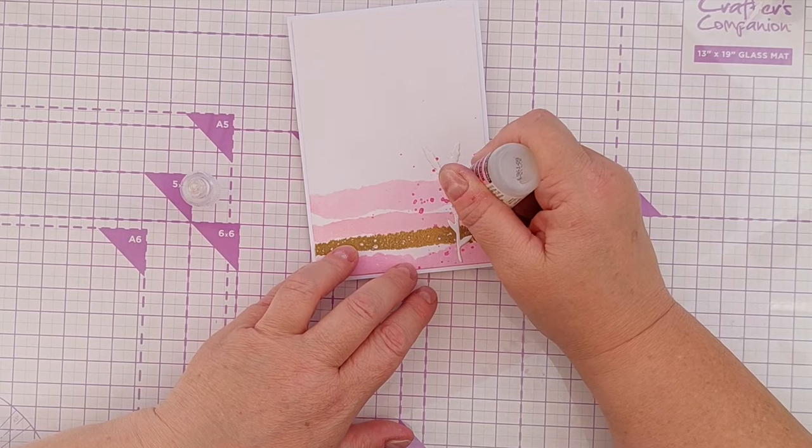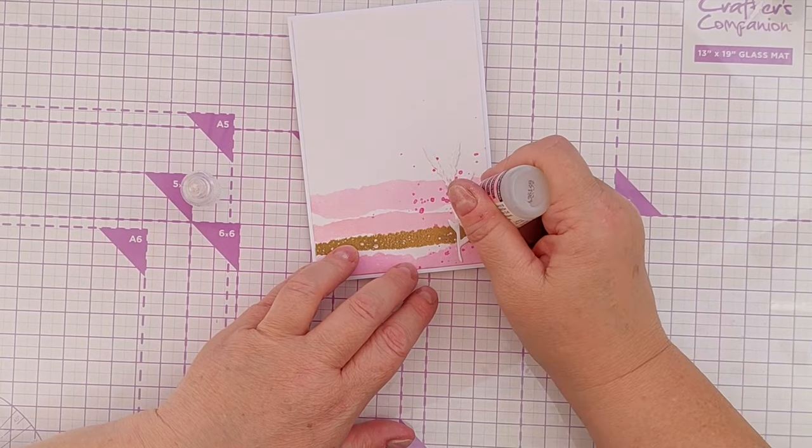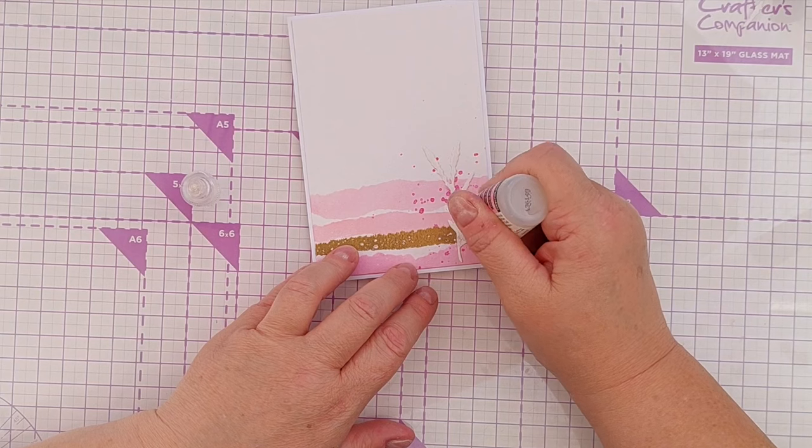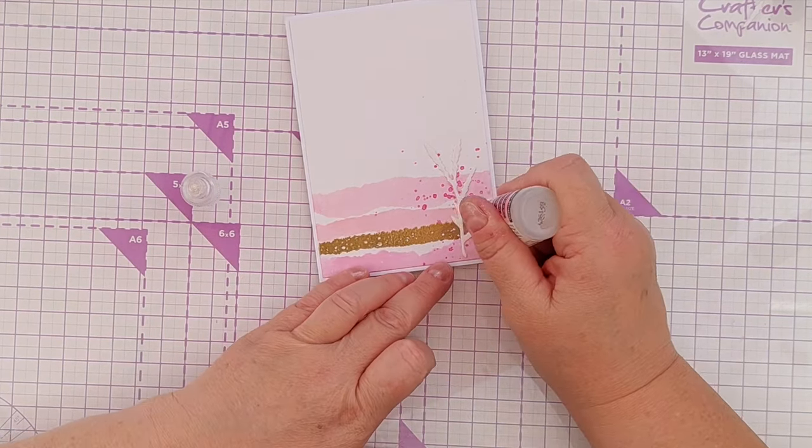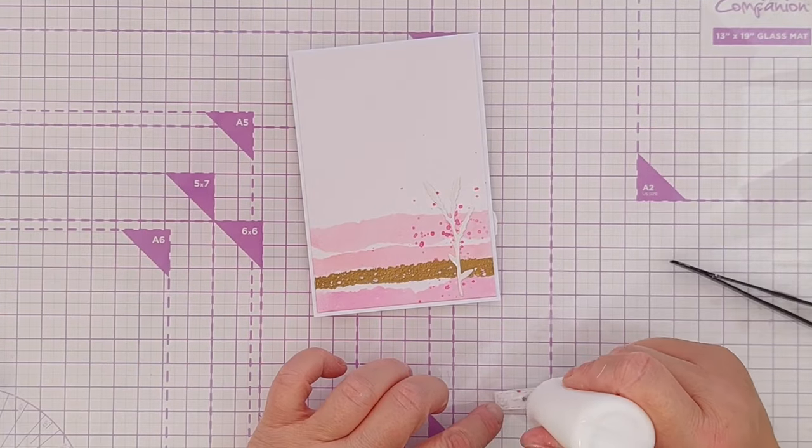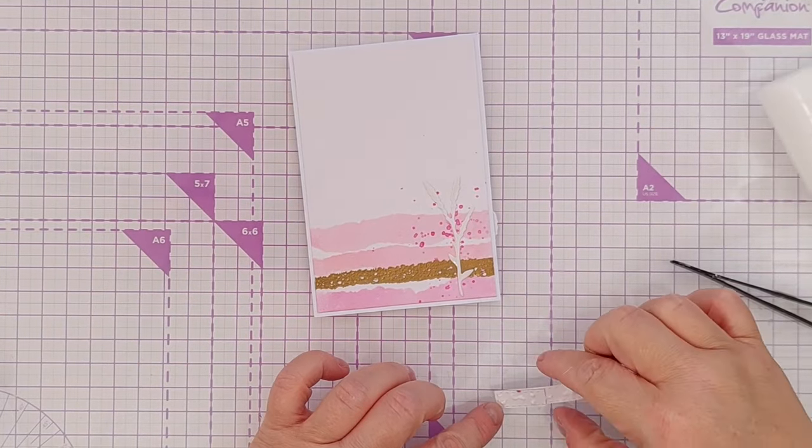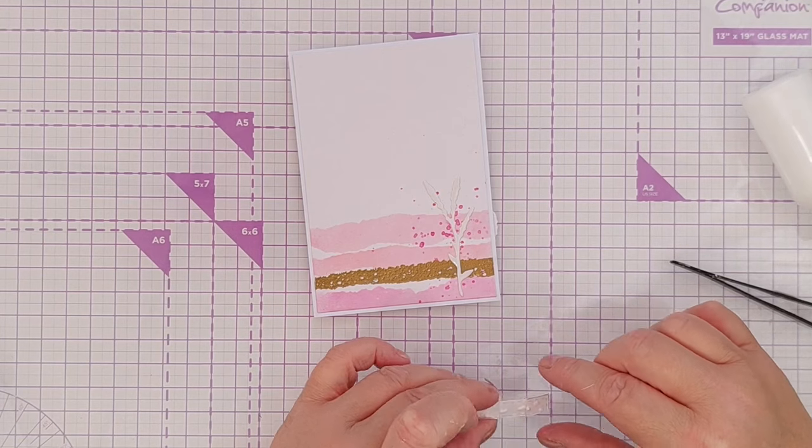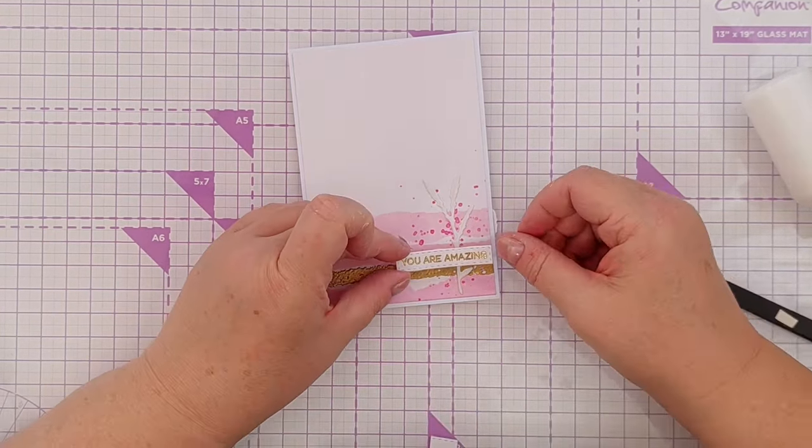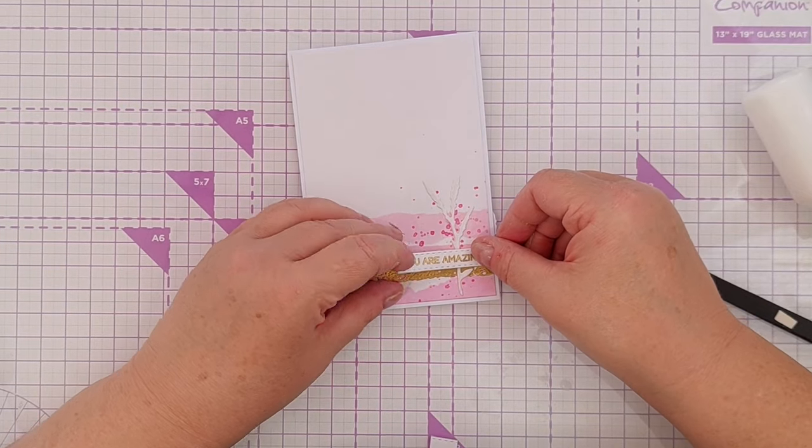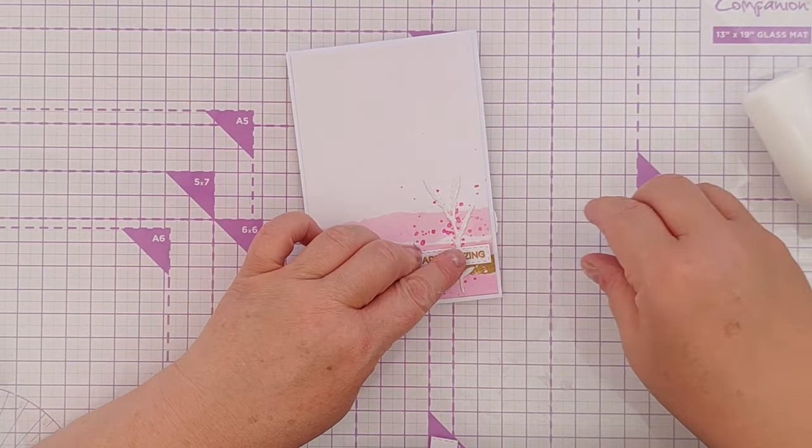And then I added my sentiment, which says 'you are amazing,' and I just heat embossed that on a piece of card. I use mixed media paper again so that the color of the sentiment strip matched the panel. And that's all been stuck already on a card blank, a four by six-ish inch card blank.